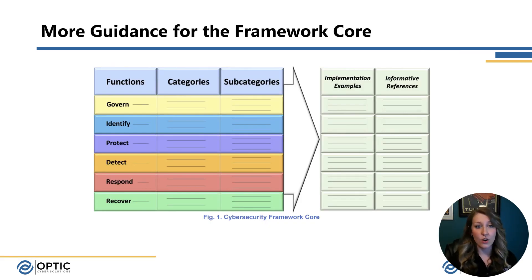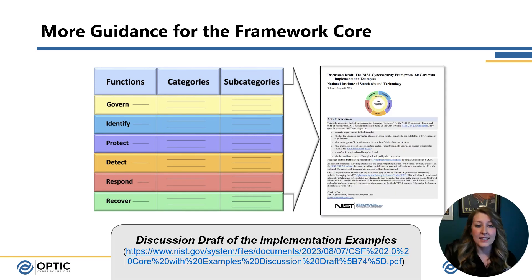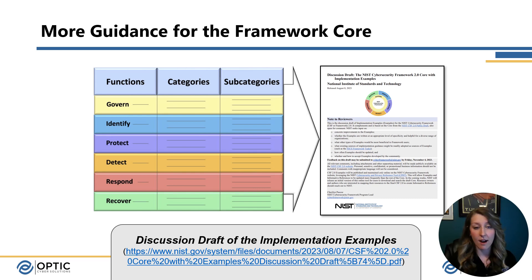One thing they did add was a lot more guidance on the core. Previously, we had informative references built into the table of the document in the core itself, but they're breaking that off now into another document, along with a ton of implementation examples. You can actually find that in the discussion draft of the implementation examples — I'll have the link here as well as below in the video notes. There's a ton of guidance there and implementation examples that I think are really going to help companies figure out what these outcomes and subcategories mean and what you really want them to do.